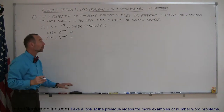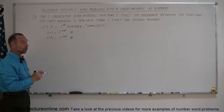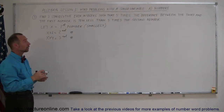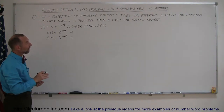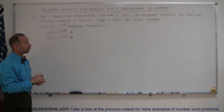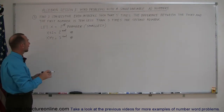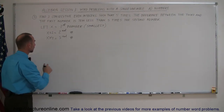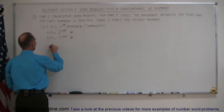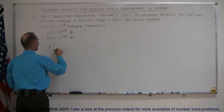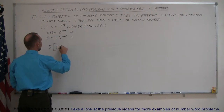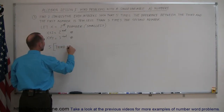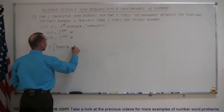Once we define the three numbers in terms of x, we can go ahead and try to come up with an equation. It says five times the difference between the third and the first number, so that's the third number minus the first number.